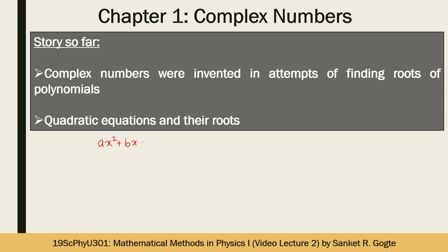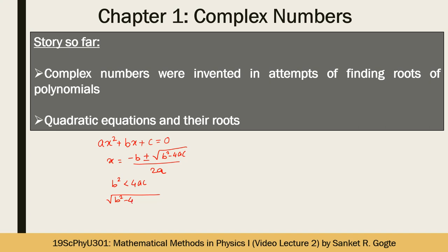The form is A x squared plus B x plus C equals 0. To find the roots we use x equals minus B plus or minus square root of B squared minus 4AC divided by 2A. Whenever B squared is less than 4AC, the term under the square root becomes negative, so we have a real number with a negative sign under a square root.